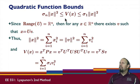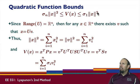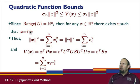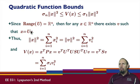We can establish quadratic norm bounds showing that V(x) = x transpose Px can be bounded below by the smallest singular value times the squared norm of x, and bounded above by the largest singular value times the squared norm of x. This gives a relationship between the Euclidean norm and this quadratic quantity. Since the range of U is all of R^n, for any x in R^n there is a v such that x equals Uv. The Euclidean norm is unitarily invariant, so the norm of Uv equals the norm of v.